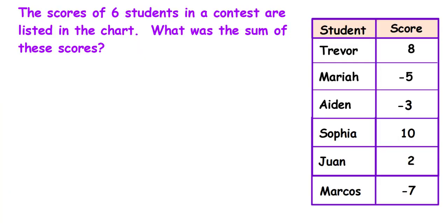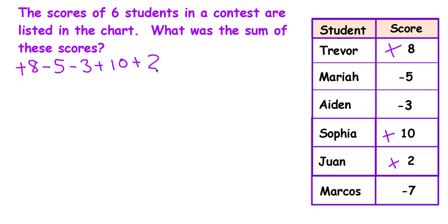The scores of six students in a contest are listed in the chart. What was the sum of these scores? Pause your video and solve it. I'm going to write these numbers: Trevor is a positive 8, negative 5, negative 3, positive 10 — if it's confusing, put the positive sign in front so you know it's positive — positive 2 and negative 7. Let me make sure I did that right: negative 8, negative 5, negative 3, positive 2. Okay, it's right.